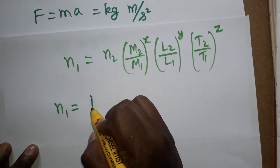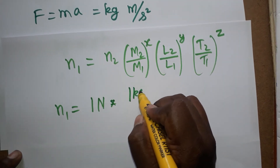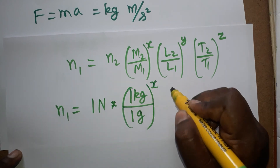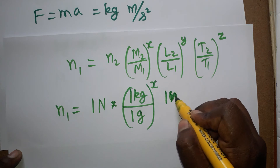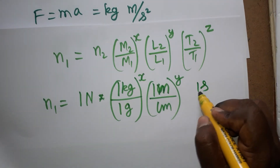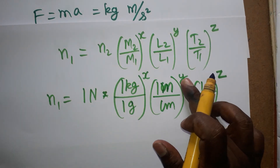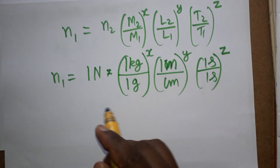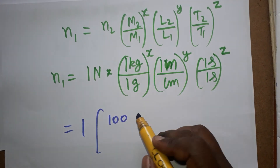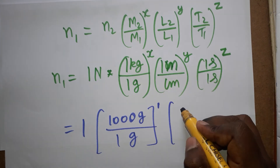N1 is Dyne and N2 is 1 Newton. M2 is in the MKS system, so it is kg; M1 is gram (CGS) — giving kg/gram to the power 1. L2 is meter and L1 is centimeter — giving meter/centimeter to the power 1. T2 is second and T1 is second — so second/second to the power −2.